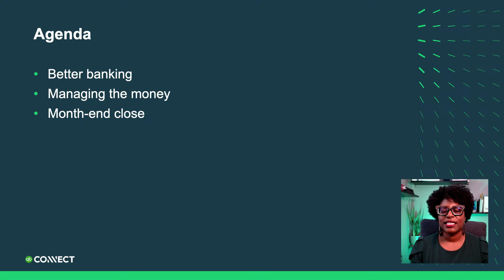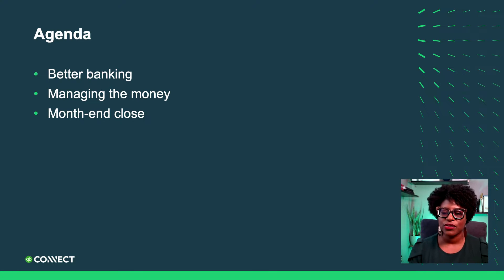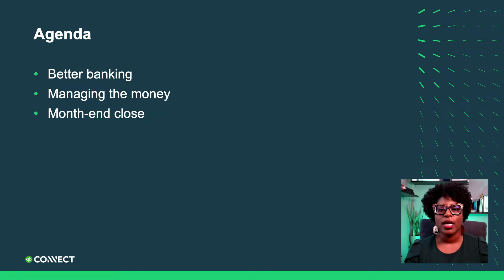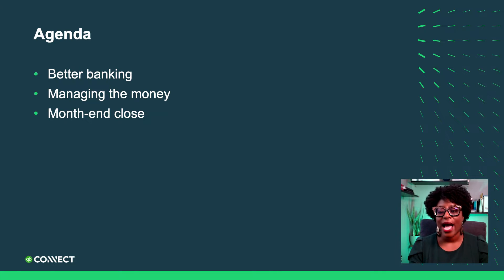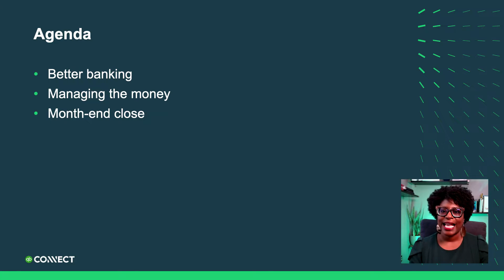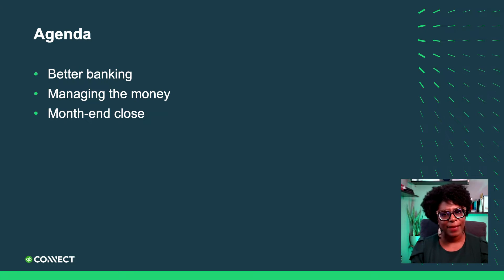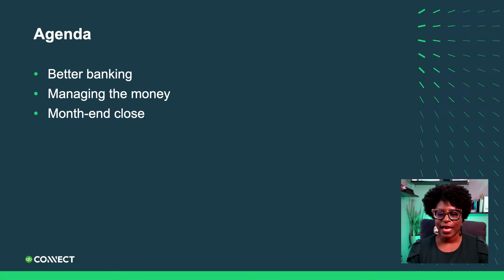What are we going to talk about today? QuickBooks Online is my favorite bookkeeping software — it's the only one I use in my practice. We're going to talk about some of the awesome features that allow for better banking, including app transactions, receipts, and rules. Then we're going to talk about how to manage the money — getting you and your clients paid, paying bills, and planning cash flow. And lastly, we'll cover month-end close things like month-in-review, the reconciliation process, and how to provide beautiful reports to your clients.